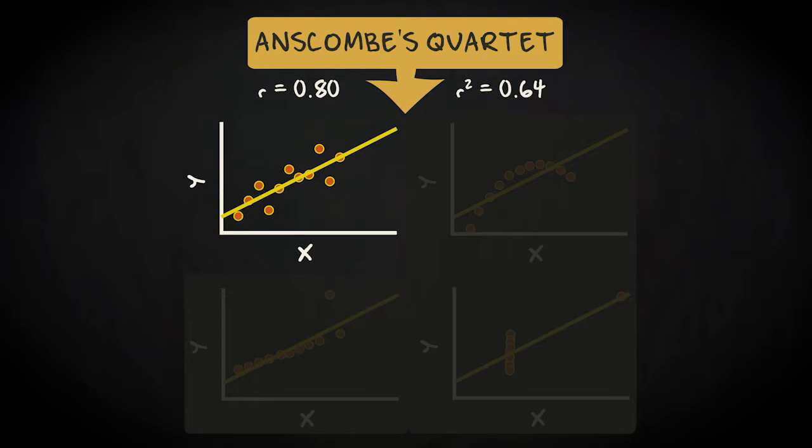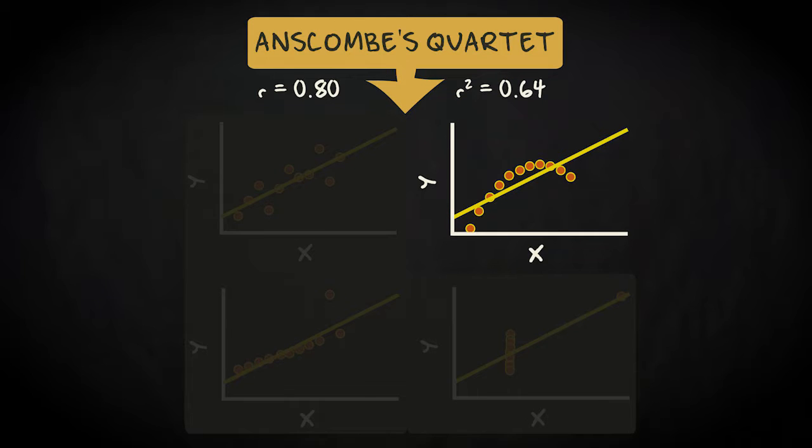The first scatter plot shows the linear pattern you would hope to find. In the second plot, there's an obvious non-linear, curved pattern. Remember, these data produce the same Pearson's r and r-squared as the first dataset.